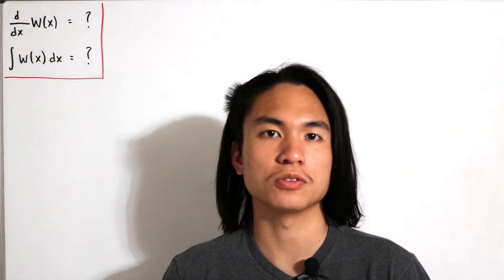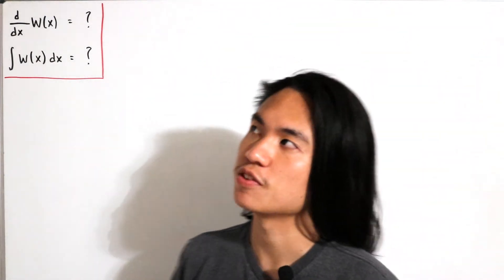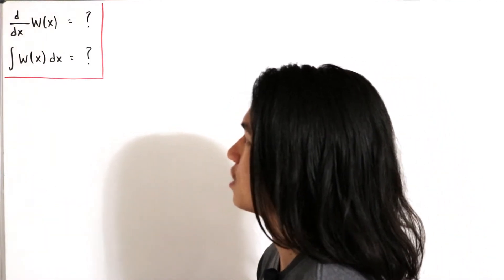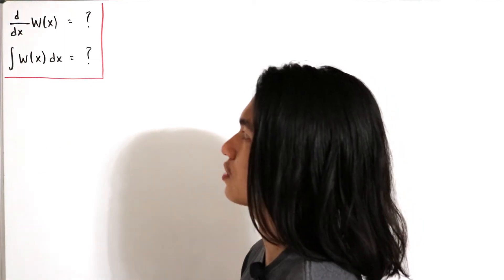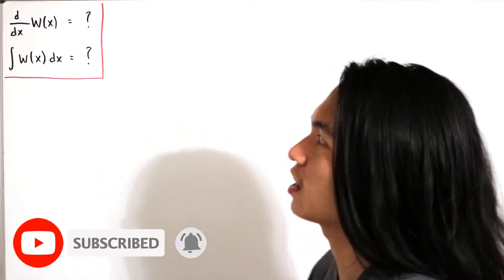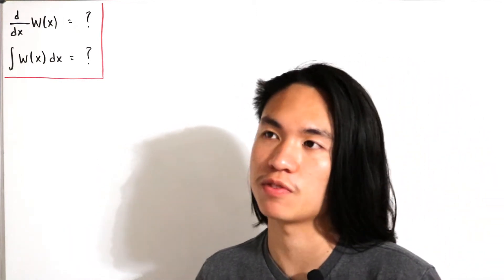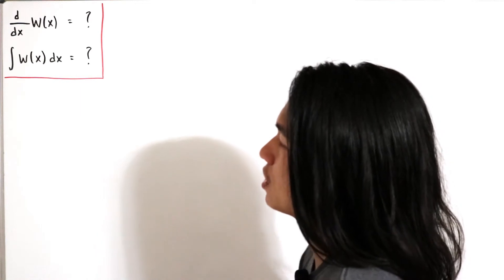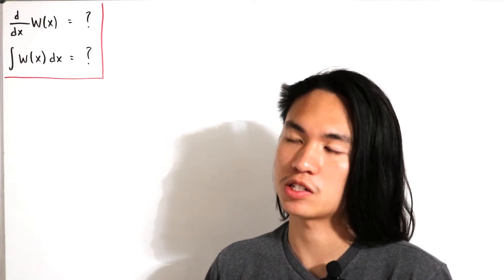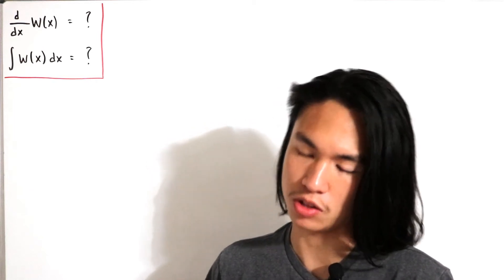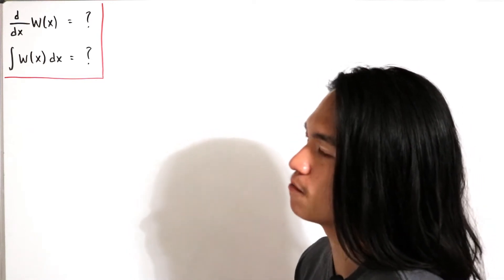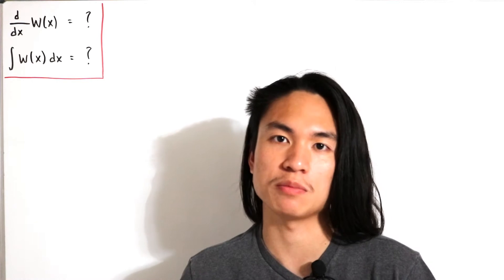Welcome back. In today's video we want to calculate the derivative of W(x) and the indefinite integral of W(x). W(x) has three names: the Lambert W function, the product log function, or the omega function. It is defined as the inverse of the function x times e to the power x.